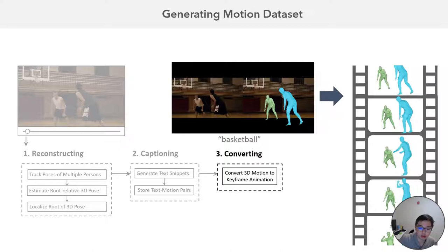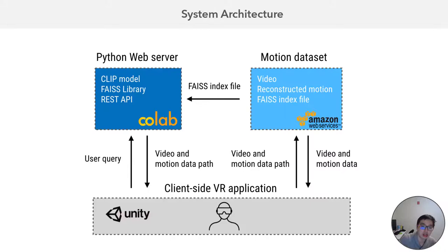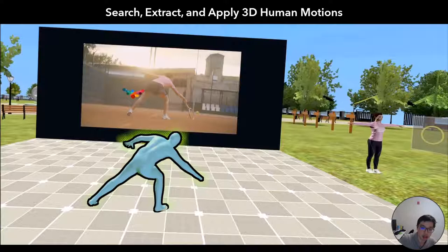Once we have the 3D human pose and users can query the motion they want, the last thing we need is to convert those 3D motions to a format that Unity can support, so we can better visualize it in the VR. Now we have the motion dataset. For the second component, we implement a VR application where users make a query that links to a Python web server, which finds the relevant videos and motions and downloads that data from Amazon S3.